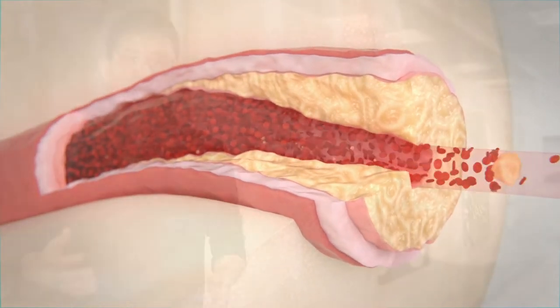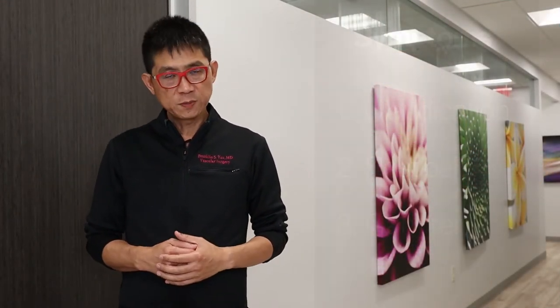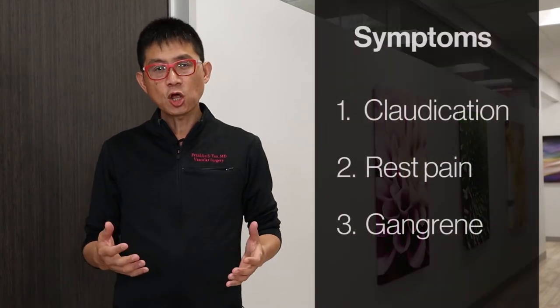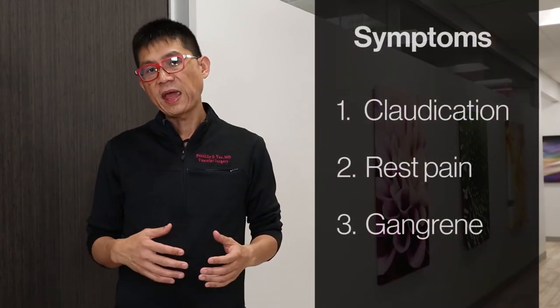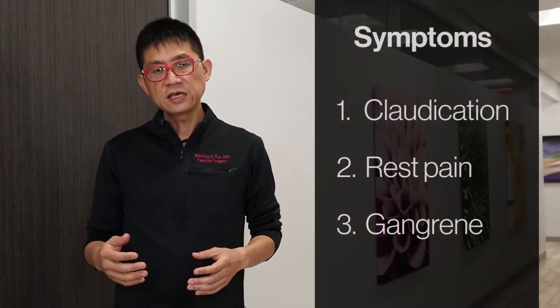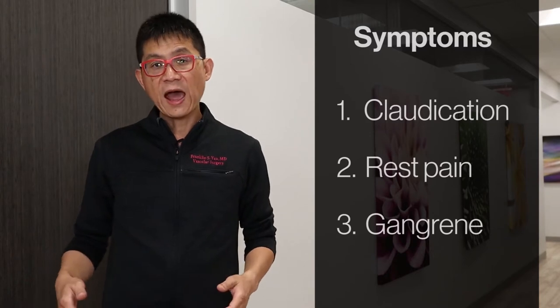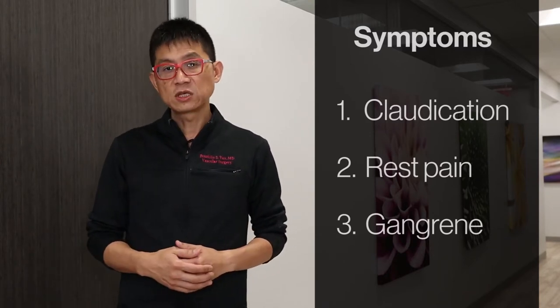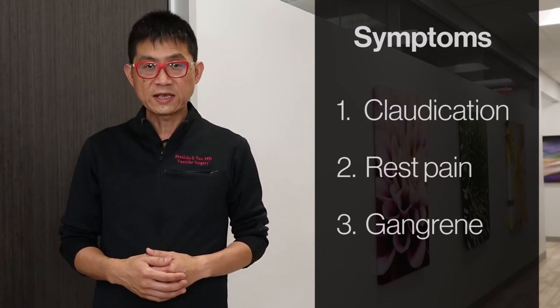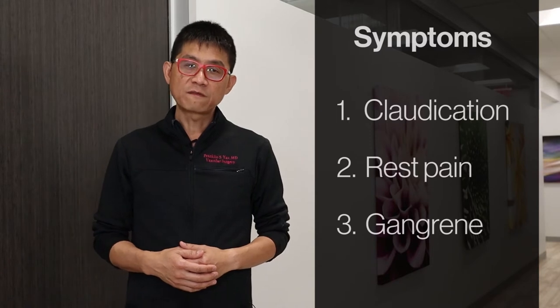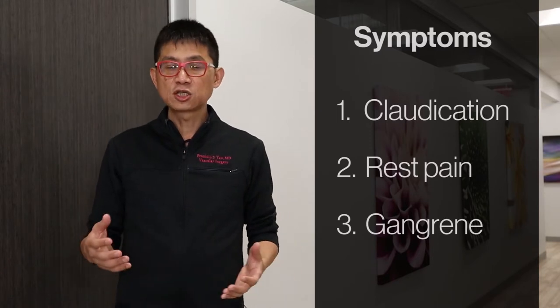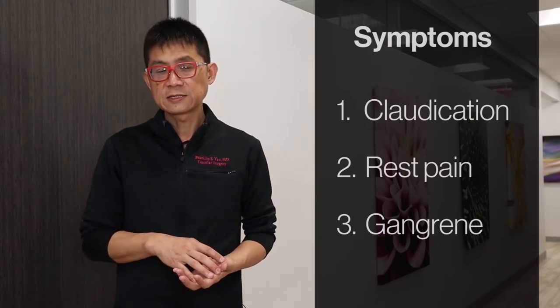Let's focus on the symptoms of PAD of the lower extremities. The first stage symptom is called intermittent claudication — pain, cramps, or fatigue of the muscles of the hip, thighs, and calves while walking that is relieved with rest. This results from blood flow that is insufficient for muscle function with exercise.